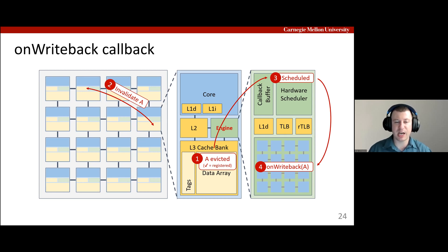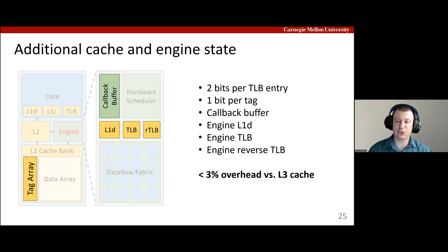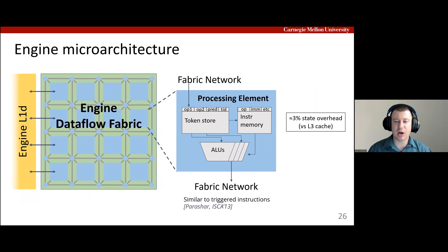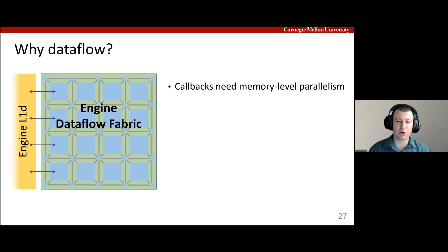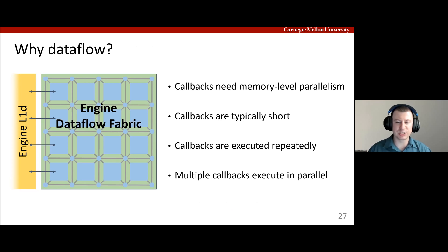TACO adds a small amount of state to track which lines have callbacks registered and to perform address translation, which adds less than 3% state compared to the L3 cache. Our dataflow fabric is similar to many prior dataflow designs — it's an array of simple processing elements that use dynamic dataflow firing to issue operations when their inputs are available, adding approximately 3% area overhead compared to the L3 cache. We found that dataflow fabrics were a good fit for TACO engines. Most importantly, callbacks need memory-level parallelism to perform well, which dataflow engines provide, unlike in-order cores used in some prior near-data computing designs. TACO callbacks also tend to be short, so they easily fit on a small fabric, overcoming one of the main limitations of dataflow architectures.